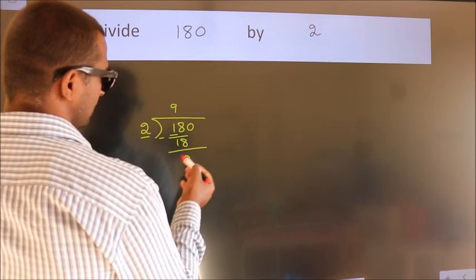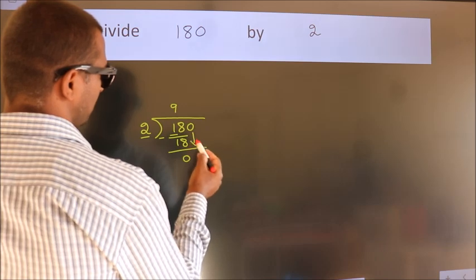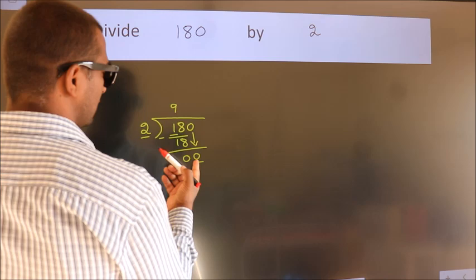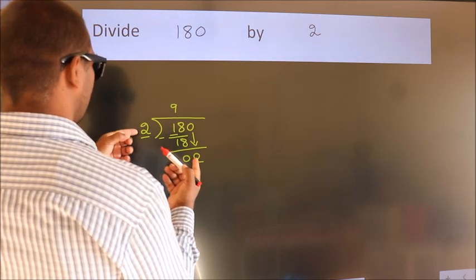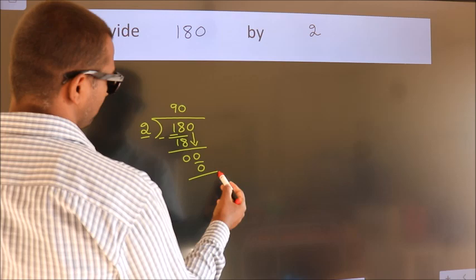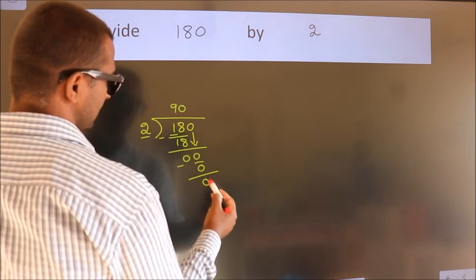After this, bring down the beside number. So 0 down. So 0. When do we get 0? In the 2 table, 2 times 0 is 0. Now we subtract. We get 0.